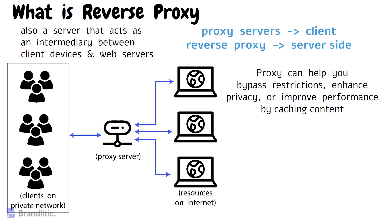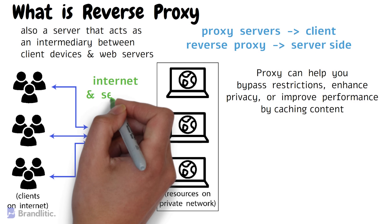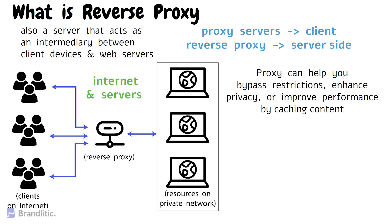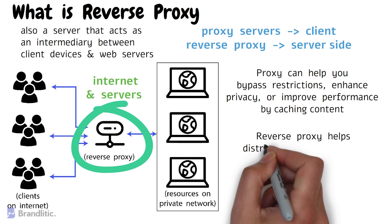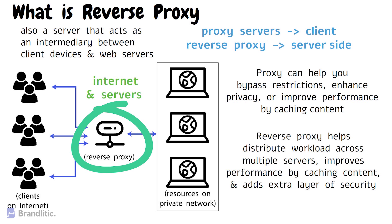On the other hand, a reverse proxy is positioned between the internet and the servers. It handles the requests coming from clients and routes them to the appropriate server within an organization's network. And that's why, instead of representing the client, a reverse proxy represents the server. When a client sends a request to a proxy server, the proxy server evaluates the request and determines which server should handle it. It then forwards the request to that server and relays the server's response back to the client. This setup helps distribute the workload across multiple servers, improves performance by caching content, and adds an extra layer of security.